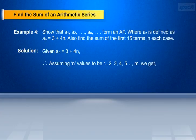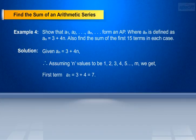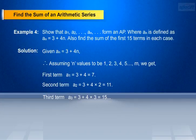Substituting n values to be 1, 2, 3, 4, 5, and so on, we get: 1st term a1 equals 3 plus 4 equals 7. 2nd term a2 equals 3 plus 4 into 2 equals 11. 3rd term a3 equals 3 plus 4 into 3 equals 15, and so on.